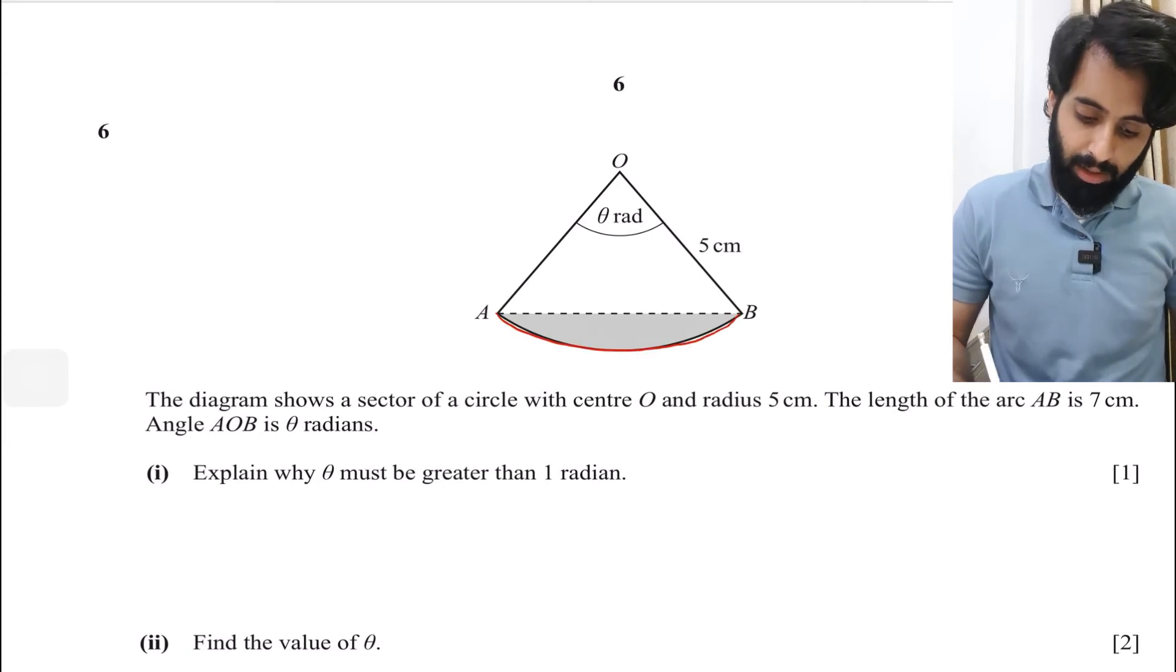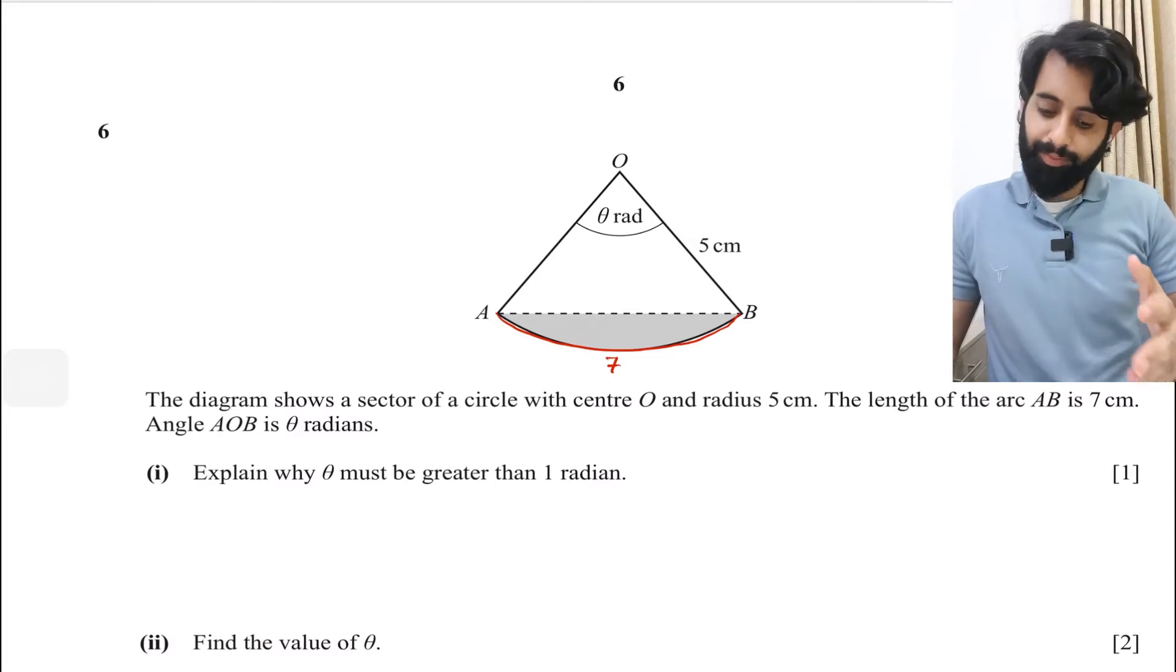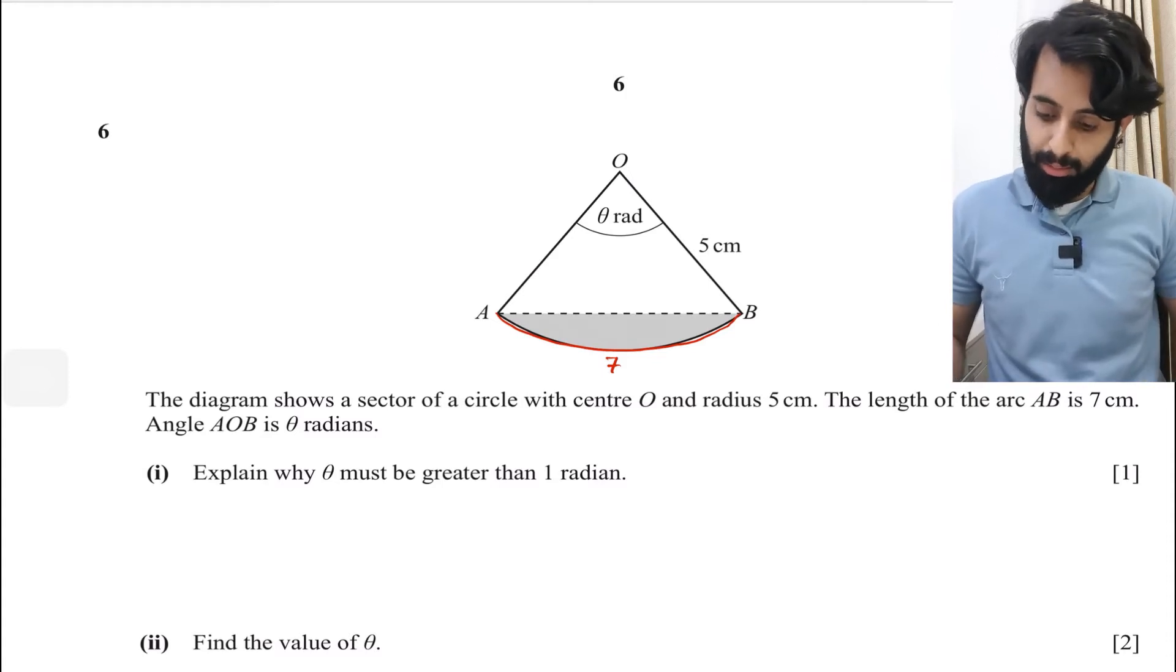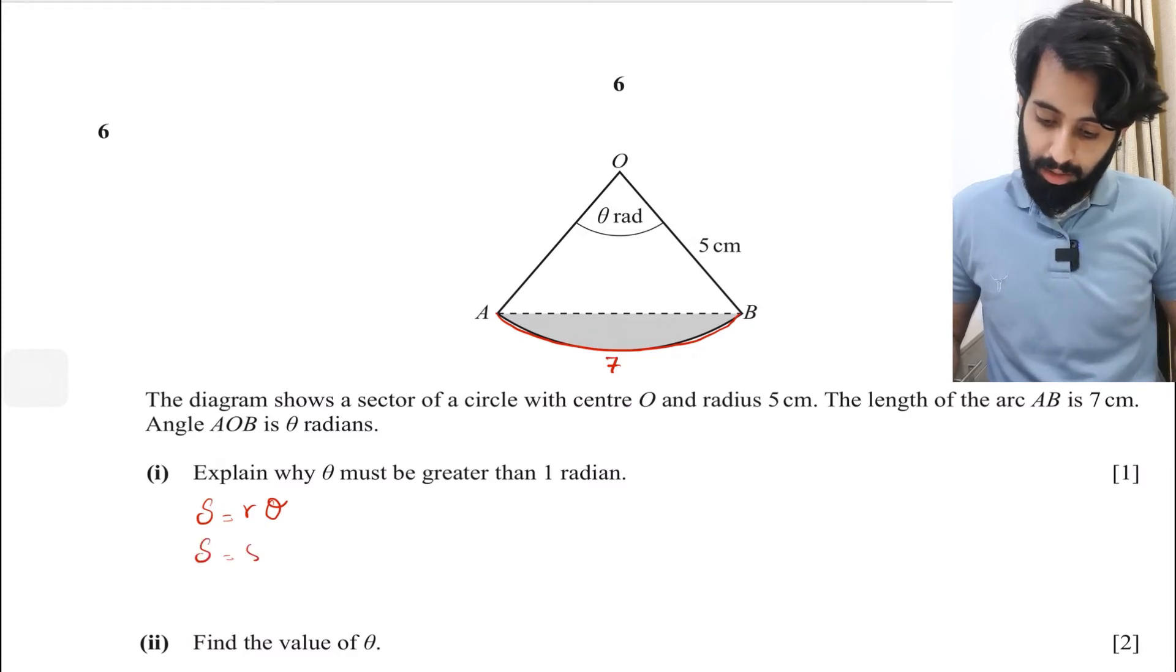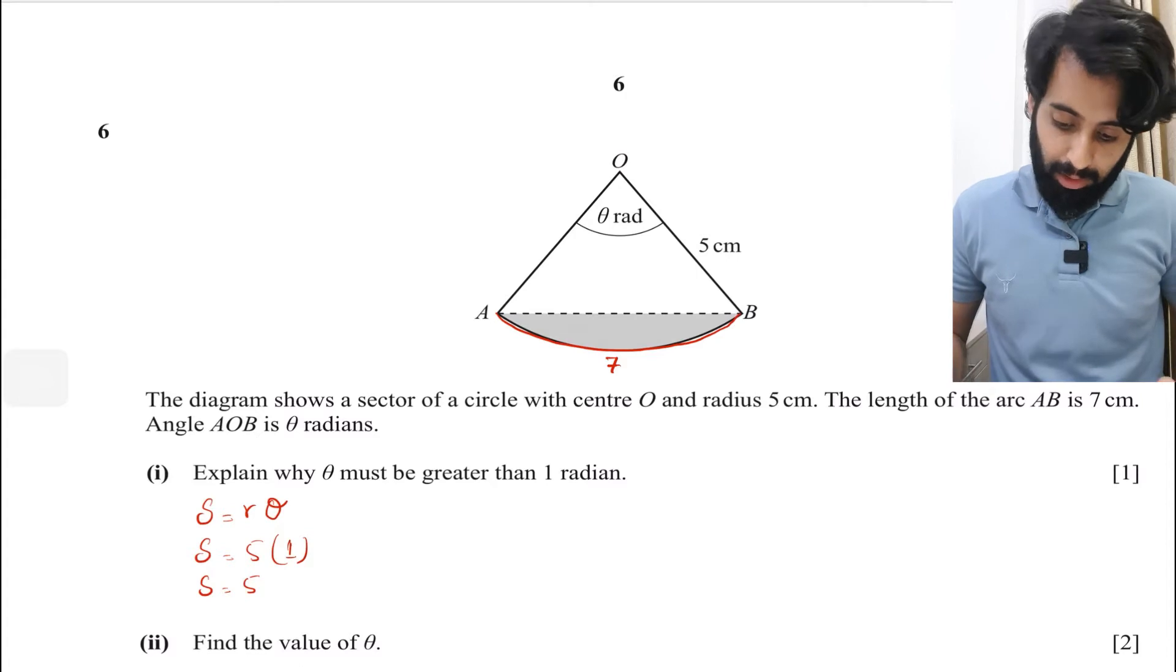So the length of arc AB is 7 cm. If theta is indeed equal to 1, let's see what happens. We know that the formula for calculating the arc length is s equals r θ in radian form. When r equals 5 and theta equals 1, the arc length equals 5. But the question says the length of arc AB is 7 cm, which means the radian has to be greater than 1.